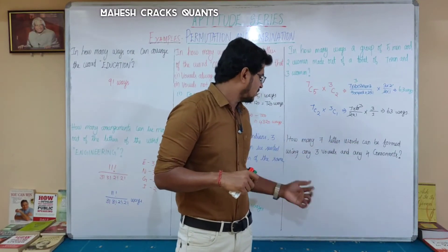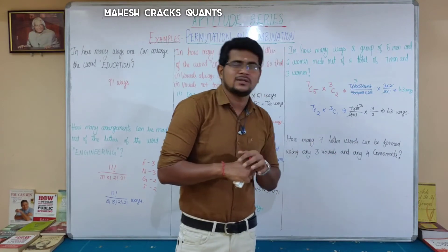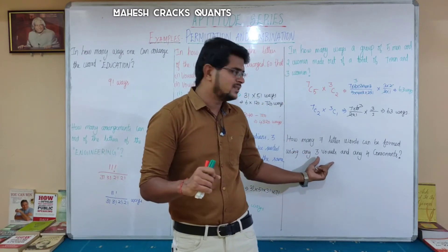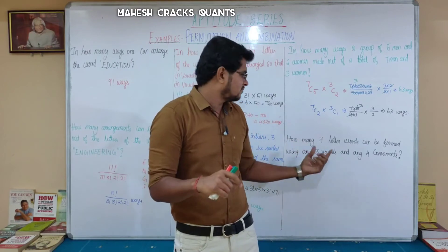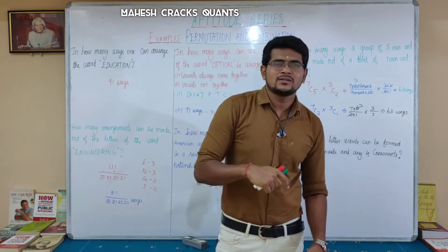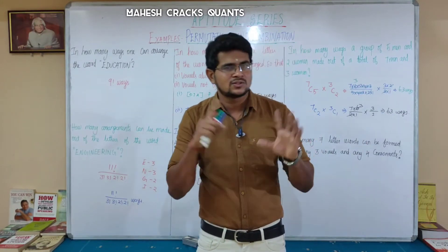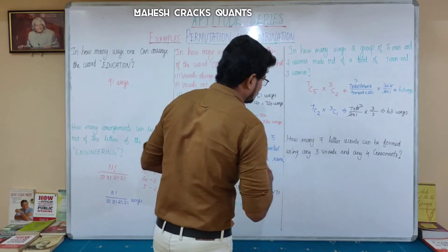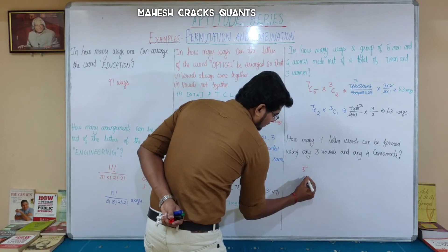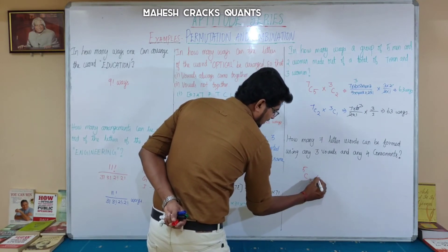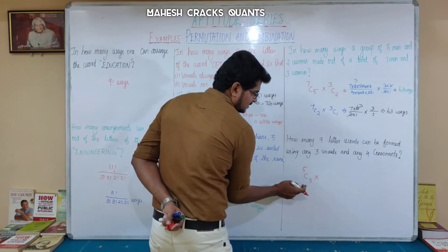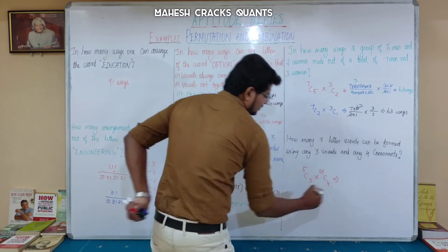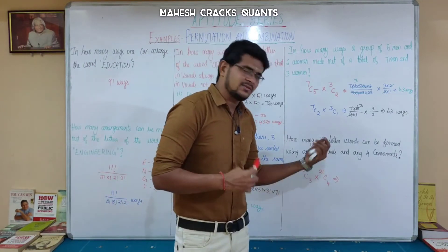Next question: how many 7-letter words can be formed using any 3 vowels and any 4 consonants? There are 5 vowels in the alphabet — choose 3 vowels from 5: C(5,3). And there are 21 consonants — choose 4 consonants from 21: C(21,4). Then multiply by 7-factorial for arrangements of the 7 selected letters.